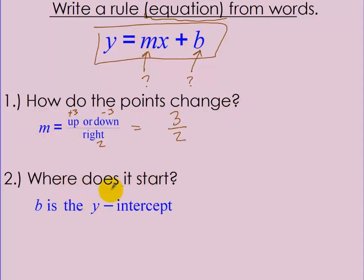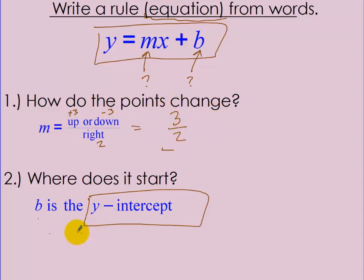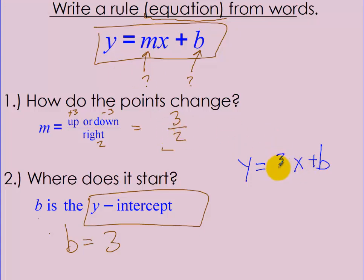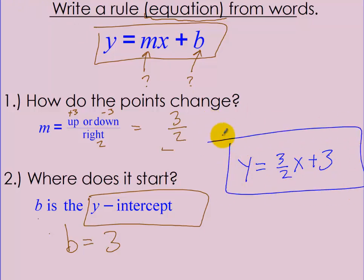The second thing — where does it start — is what we plug in for b. b is the y-intercept, that y value when x equals 0. For example, if m is 3 over 2 and b is 3, then instead of y equals mx plus b, I substitute: y equals three-halves x plus 3. So we find the m and the b, and substitute them in to write the rule.